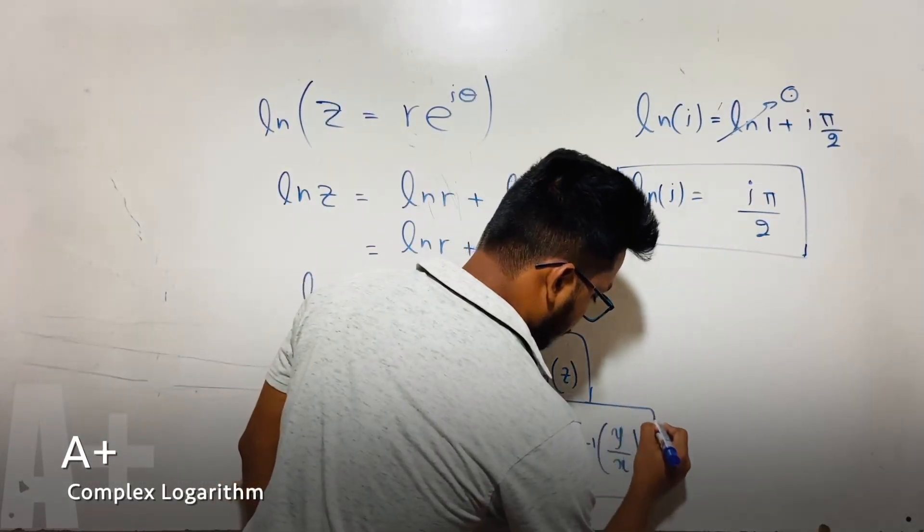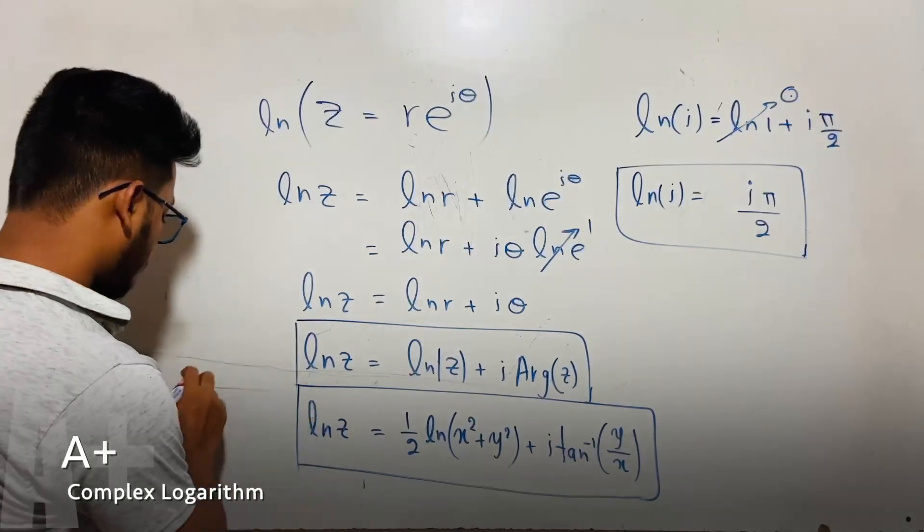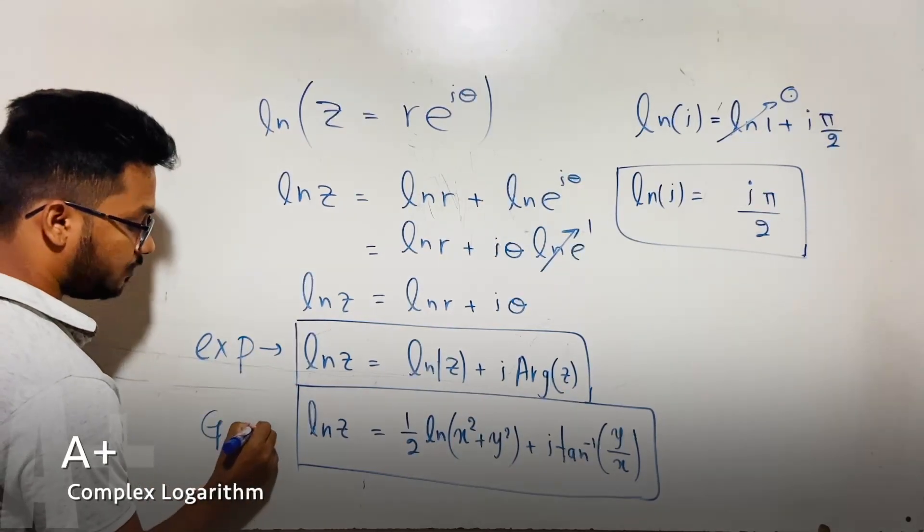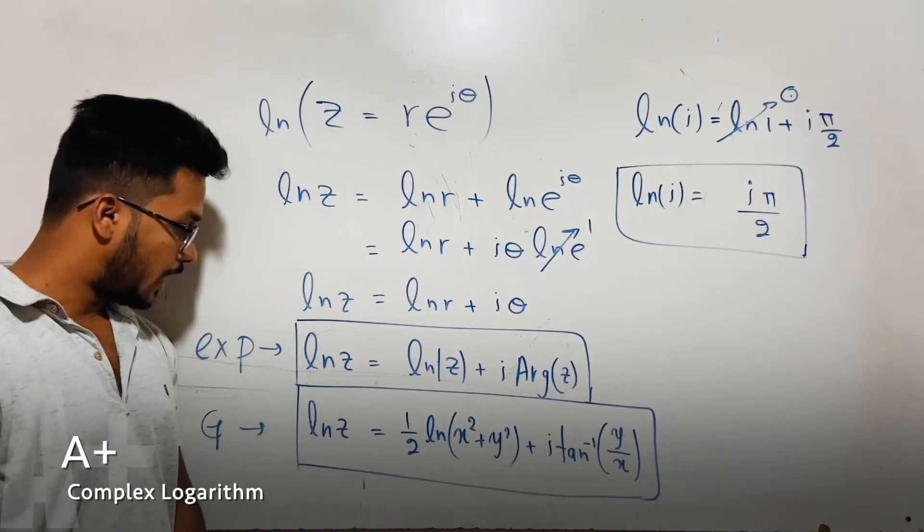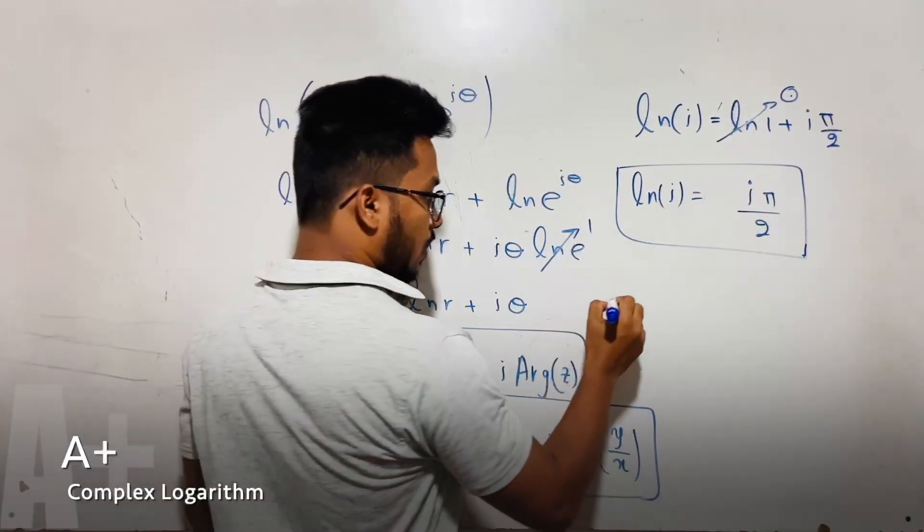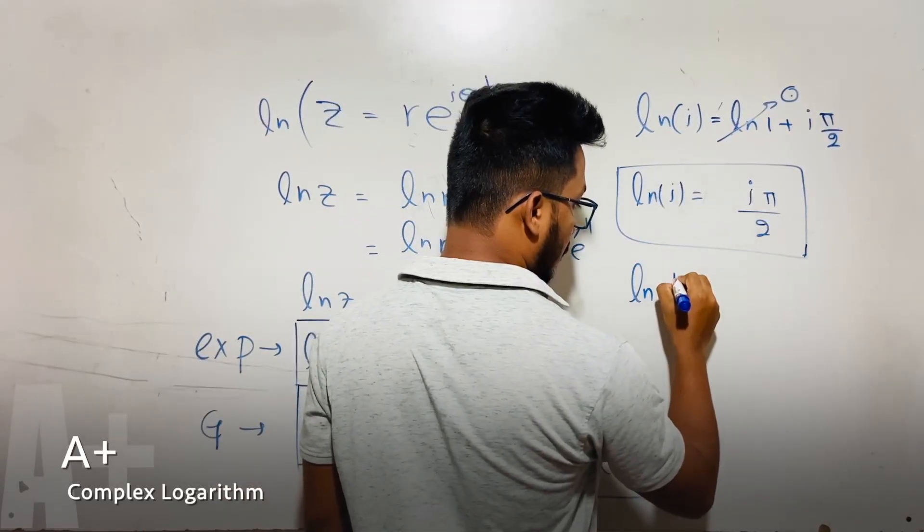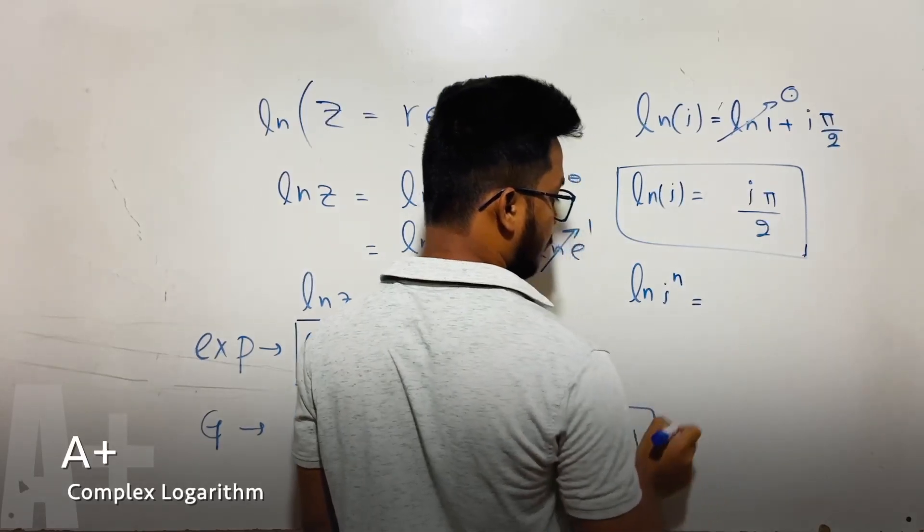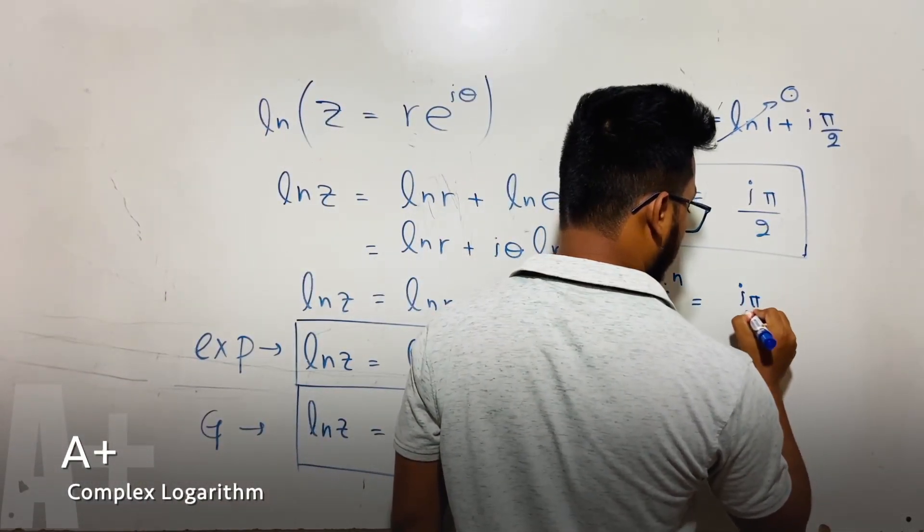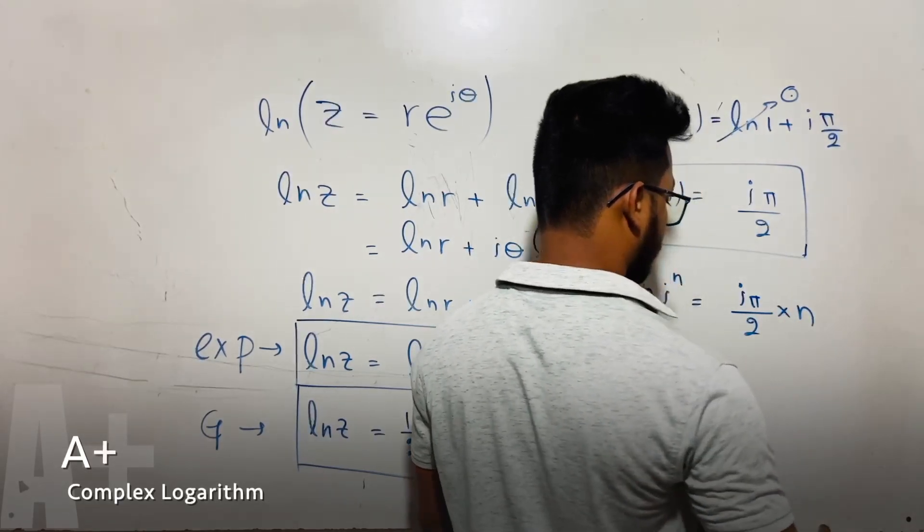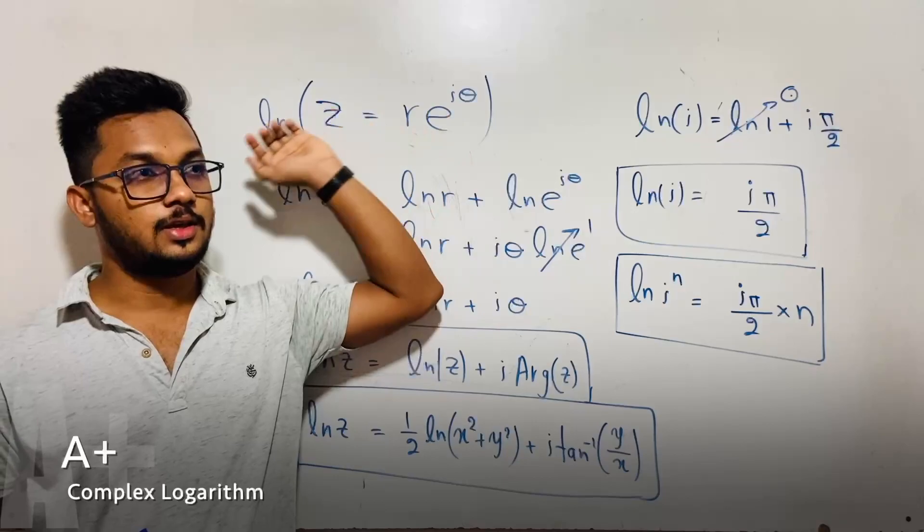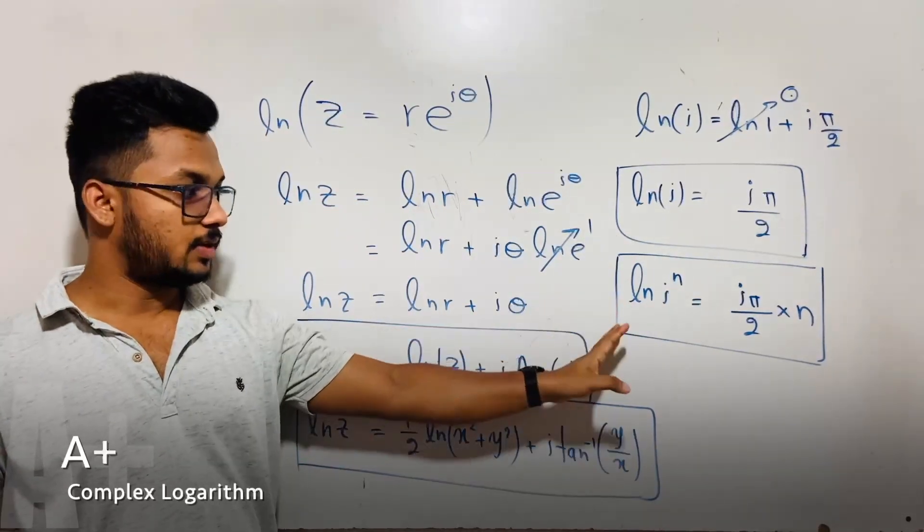This is the exponential method, this is the general method. Actually, this complex logarithm is a very complicated thing. Now I want to find ln i to the power n. This value, how do we find? We can find that using this equation: i π by 2 into n. We can prove this equation using De Moivre's theorem. This is very simple.